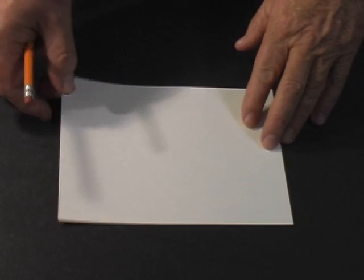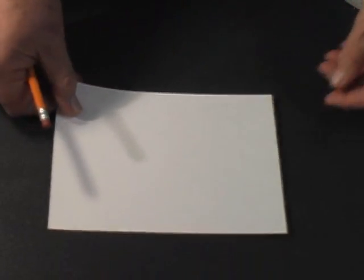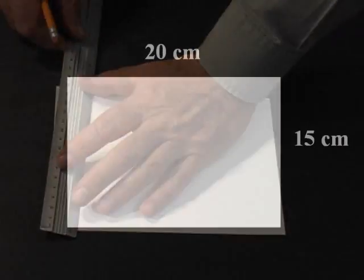Start the construction of this inclinometer by creating a 15 by 20 centimeter rectangle out of stiff card like Bristol board.